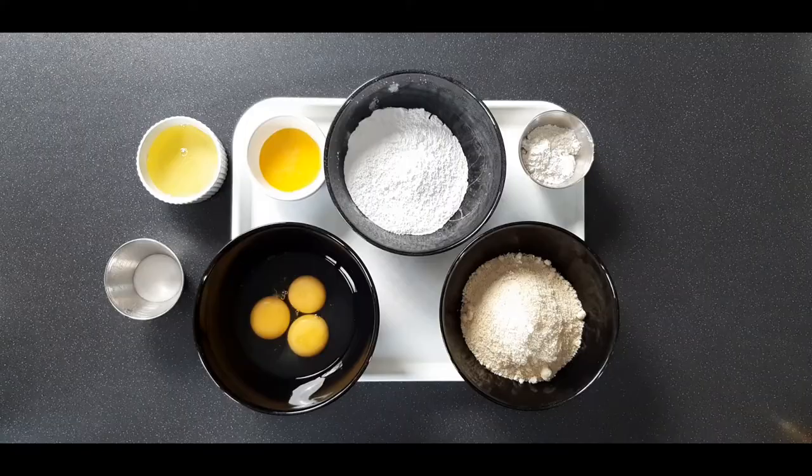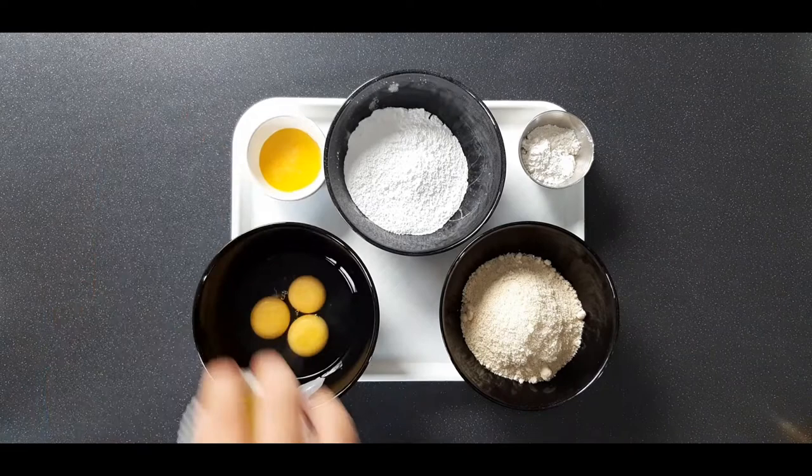Next up, we're going to be making an aerated almond sponge that is going to be spread across that stencil paste we just made once it's frozen. So let's just clear these ingredients out of the way.